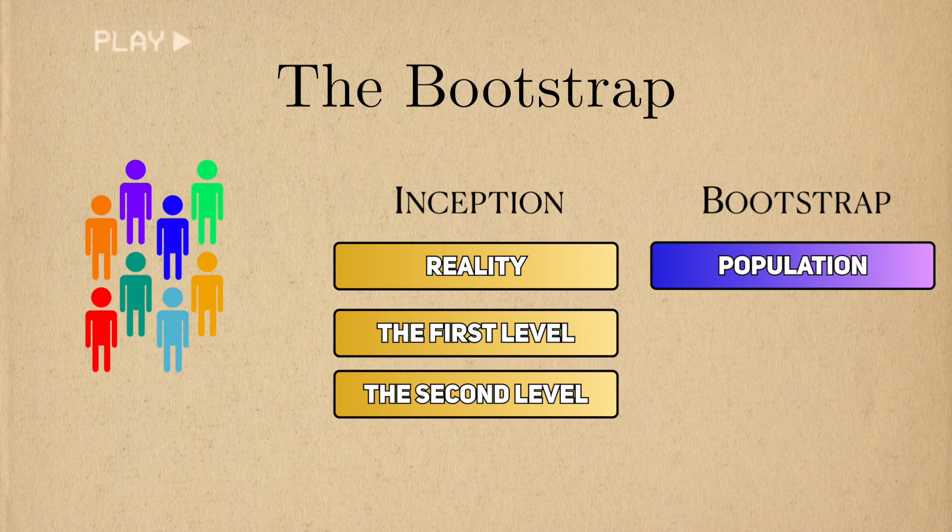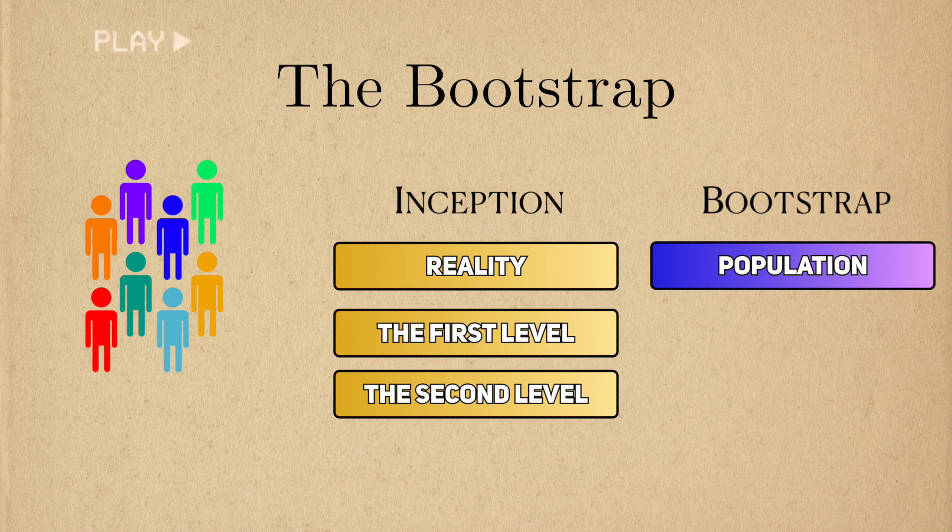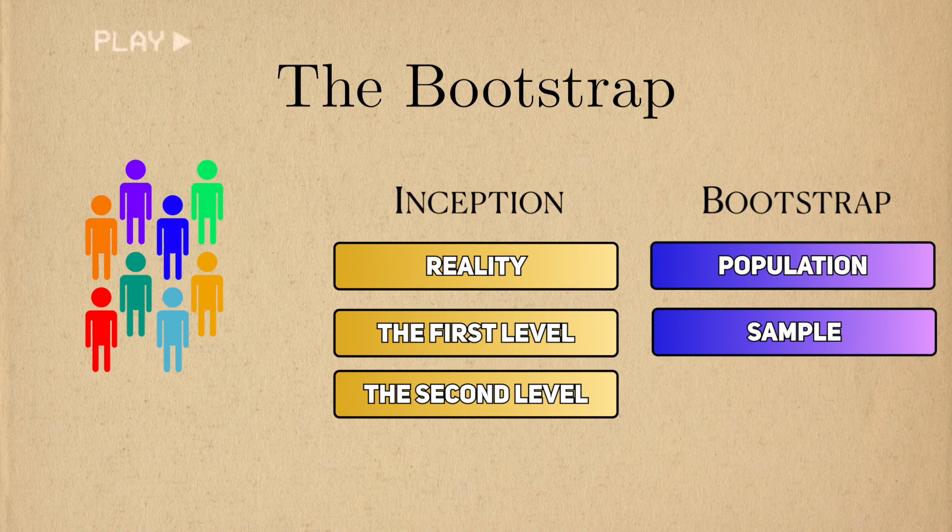In the bootstrap, the first level is the population world, and after we collect data, we go into the sample world, where we actually observe data. The bootstrap takes it a level further and tries to extract data from the sample itself.